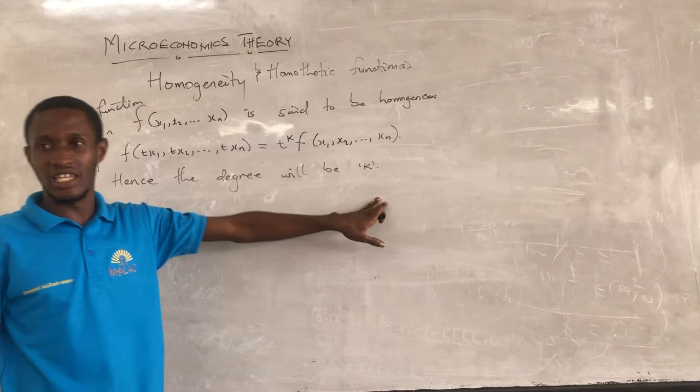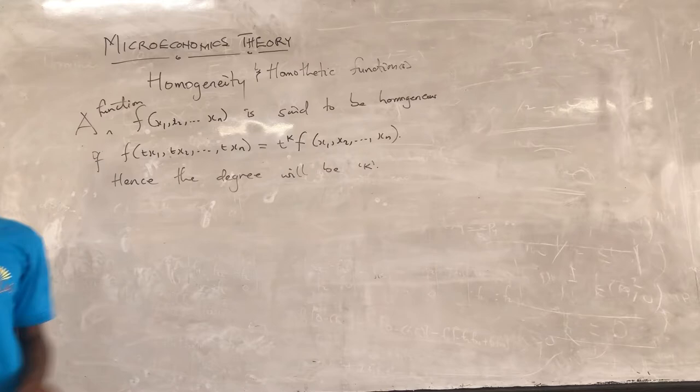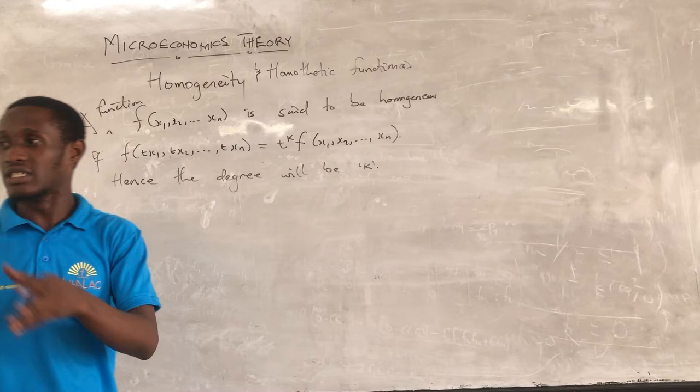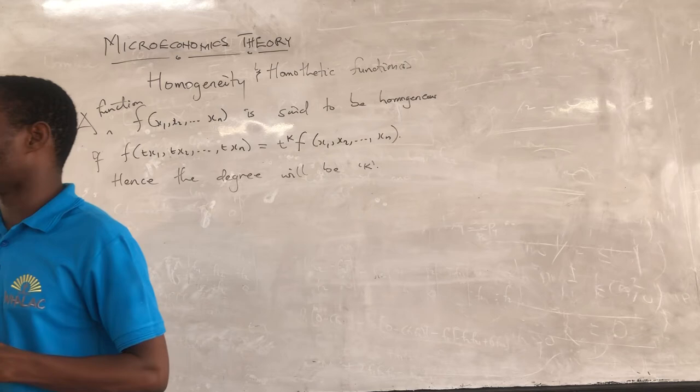This function will be said to be homogeneous of degree k if f(t·x1, ..., t·xn) equals t^k · f(x1, ..., xn). To prove that a function is homogeneous, you introduce a scalar to the input and see if you can factor the scalar out to a certain degree.